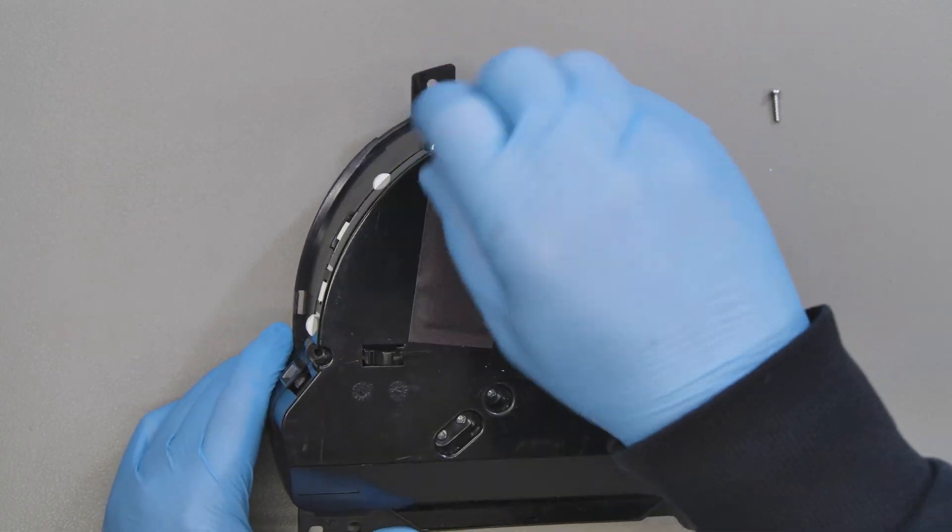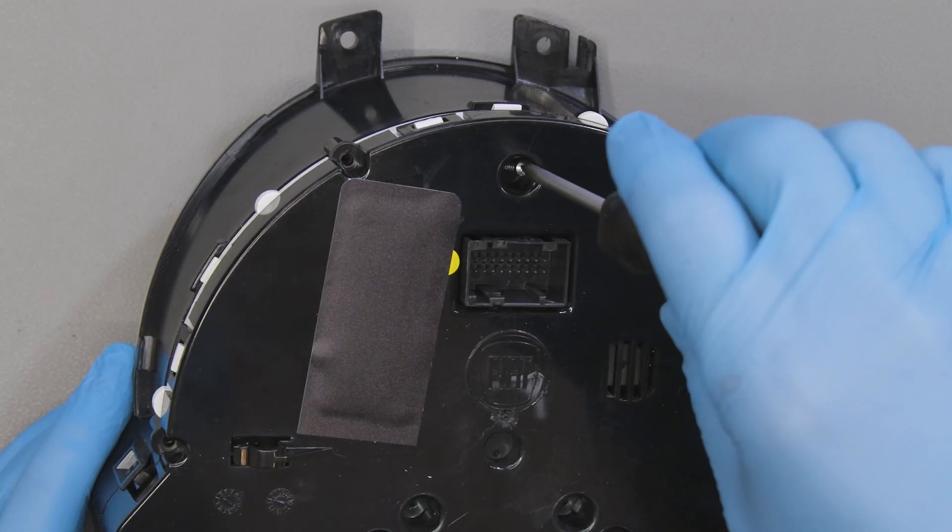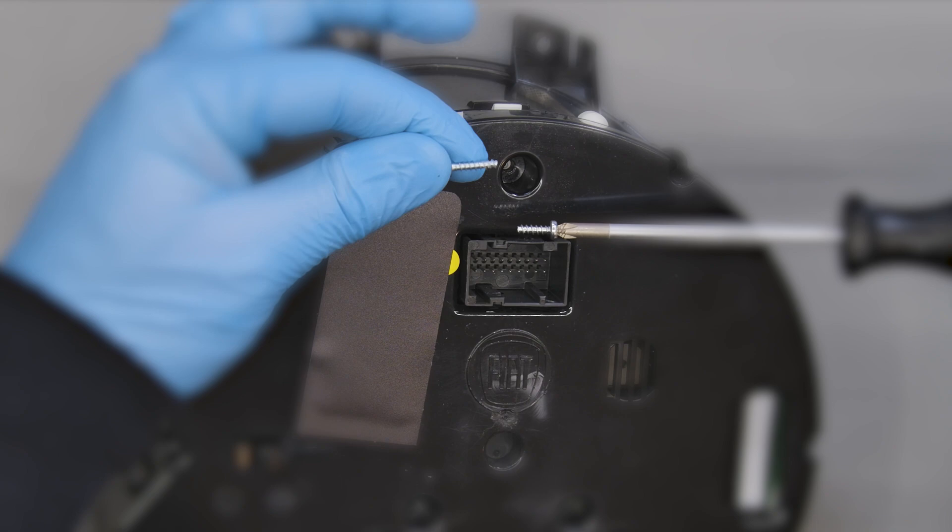Undo the metal screws on the back of the cluster, minding that the shorter screw will be tightening the central hole above the connector when reassembling.